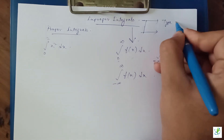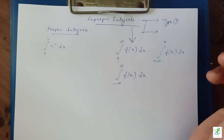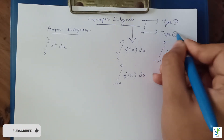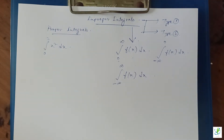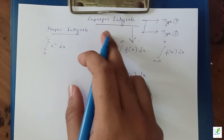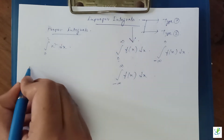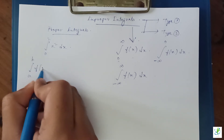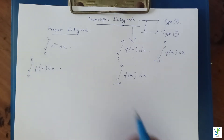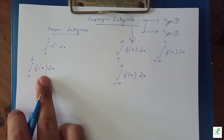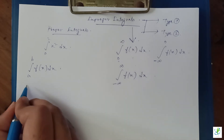Improper integrals are basically of two types: Type 1, called improper integrals of the first kind, and Type 2, called improper integrals of the second kind. Now, how can we define improper integrals? Consider the integral from a to b of f(x) dx. To define this as an improper integral, we must look at the following conditions.